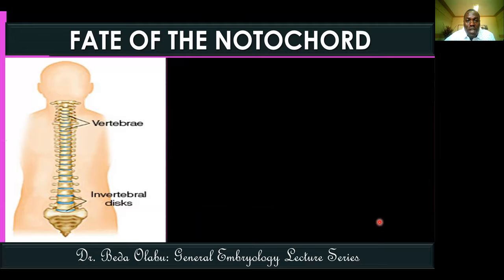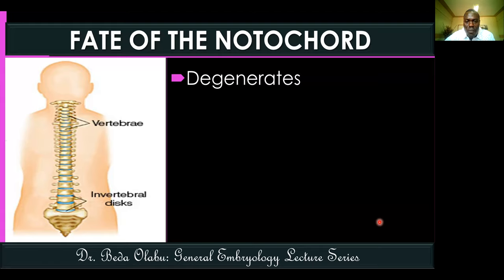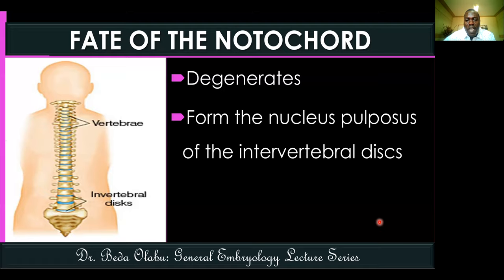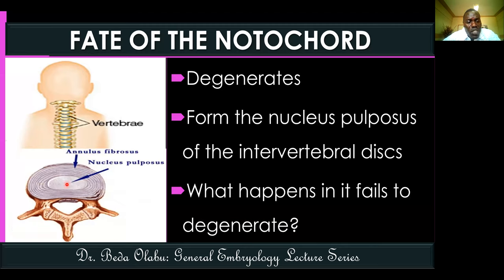Once the notochord has served its functions, most of it disappears. However, not all parts disappear - some parts become incorporated within the developing intervertebral disc, forming the nucleus pulposus. So the nucleus pulposus does not come from the sclerotome; it comes from the remnants of the notochord. The annulus fibrosus and vertebrae come from the sclerotome, a derivative of the somite and paraxial mesoderm.